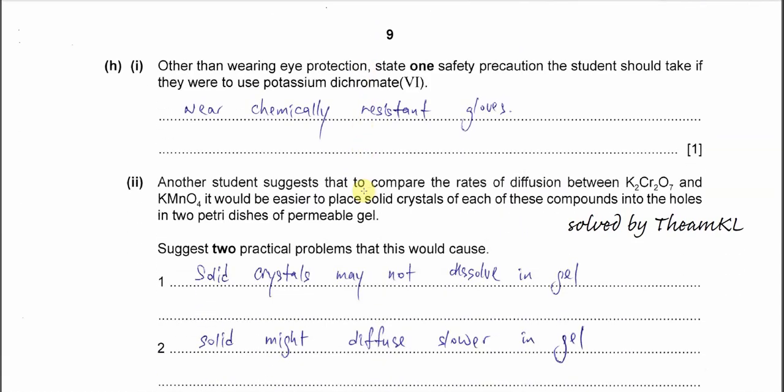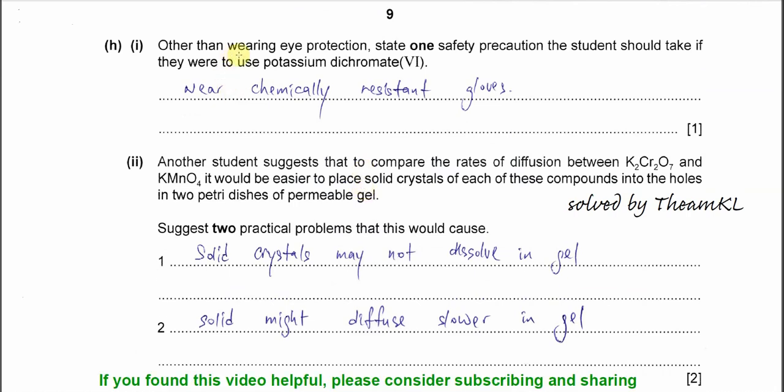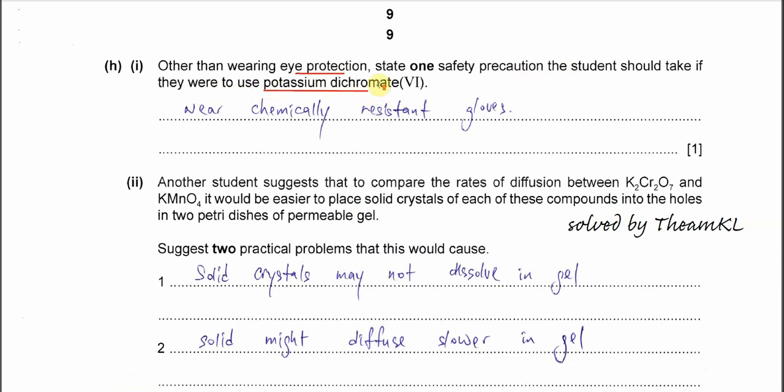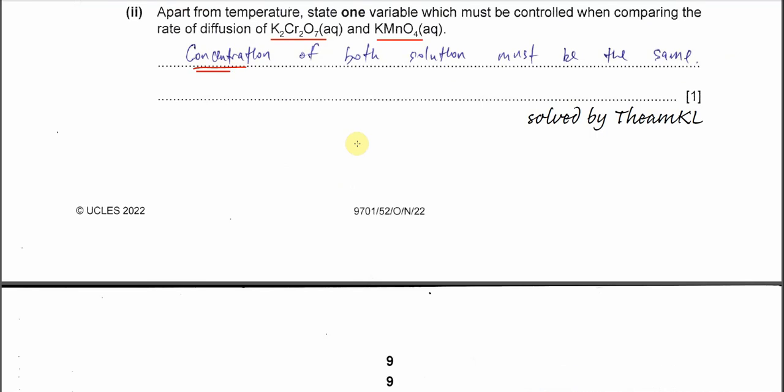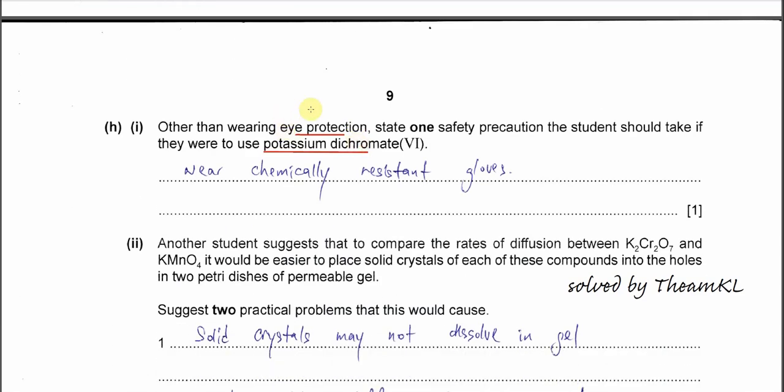Part H1: other than wearing eye protection, state one safety precaution the student should take if they use potassium dichromate. Because potassium dichromate is corrosive, in order to protect ourselves other than eye protection, we must protect our hands. Therefore, we must wear gloves. Nowadays, better don't just say wear gloves because gloves have different types. It's better for you to put chemically resistant gloves, then it's a better answer.